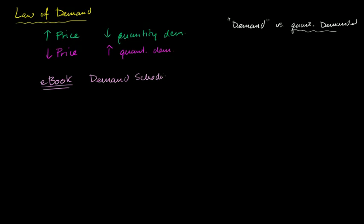Demand schedule. Which is really just a table that just shows how the price - and actually I made my first mistake. I just said how price relates to demand. I should say how price relates to quantity demanded. And how quantity demanded relates to price.